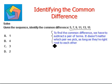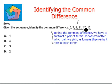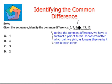Before we solve, let's understand how to find the common difference. To find it, we subtract a pair of terms from the given sequence. It doesn't matter which pair we pick, as long as they are right next to each other. So let's pick 9 and 11, and subtract: 11 minus 9.